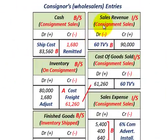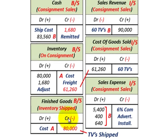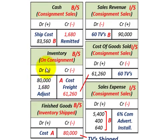Now let's look at how we make our journal entries from the consignor or the wholesaler's perspective. We're going to have inventory on consignment. First, we have to take care of that inventory — we're transferring from finished goods inventory on our balance sheet. We credit or reduce our finished goods inventory by the cost of that inventory, $80,000, and then debit or increase our inventory on consignment account by $80,000.